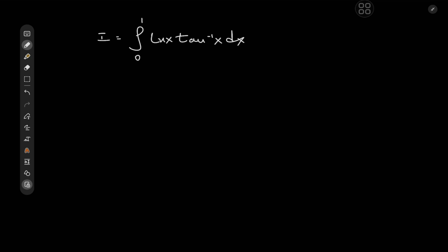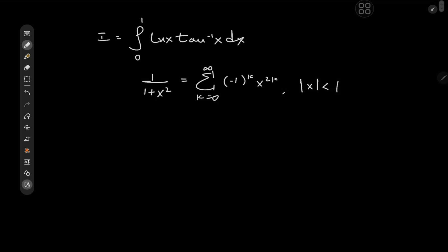We have the integral from 0 to 1 of log(x) times the arctangent of x. An integration by parts approach becomes a bit cumbersome, so we're going to invoke a nice trick. That trick relates to the geometric series of 1 over 1 plus x², which can be expanded as the sum over k from 0 to infinity of (−1)^k times x^(2k), provided that |x| < 1, which is valid on our interval of integration.